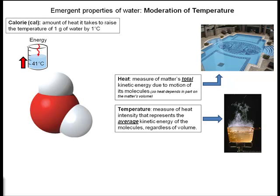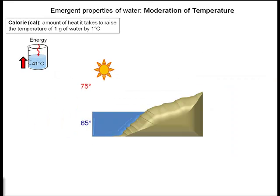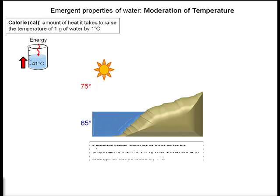We can use all of these principles in a real-life situation called coastal temperature moderation, which is what happens in California where the temperatures are relatively moderate throughout the seasons. In order to understand how coastal temperature moderation works, we need to understand a principle called specific heat, which is the amount of heat that must be absorbed or lost for one gram of a substance to change its temperature by one degree Celsius.